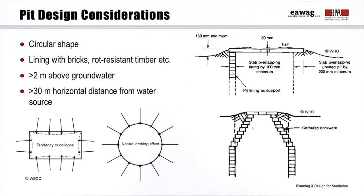The bottom of the pit should remain unlined to allow for the infiltration of liquids out of the pit. Permeable side walls can accelerate the leaching. To protect the groundwater, sometimes watertight or sealed pits are built, but this can be very expensive. To prevent groundwater contamination, the bottom of the pit should be at least 2 meters above the groundwater level. A minimum horizontal distance of 30 meters between a pit and a water source is normally recommended to limit exposure to microbial contamination. These values depend on the soil type, moisture and other environmental factors.